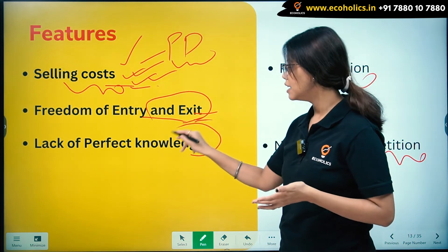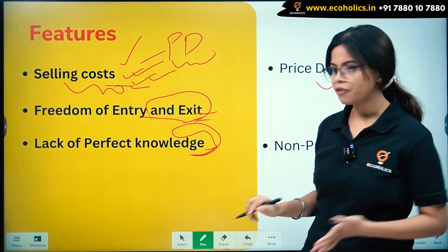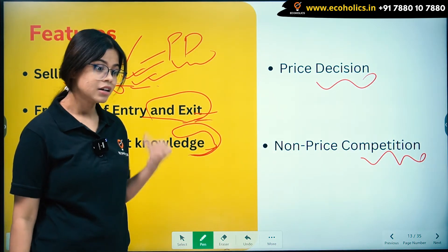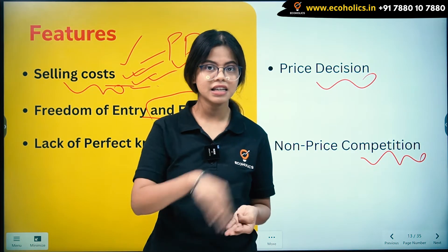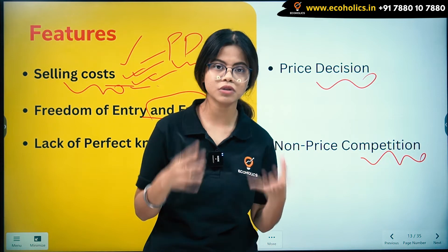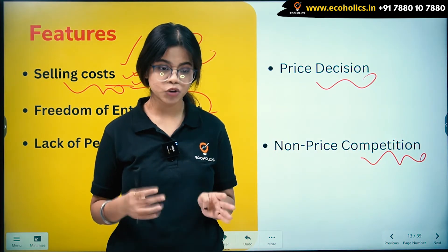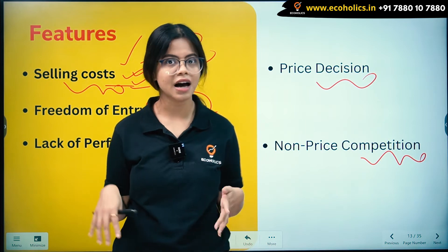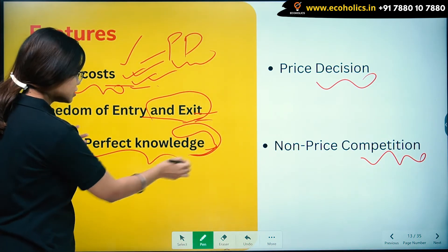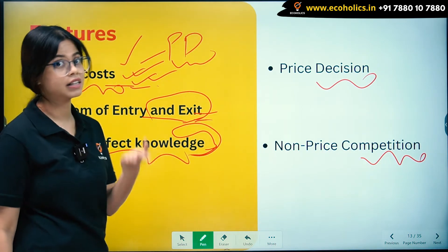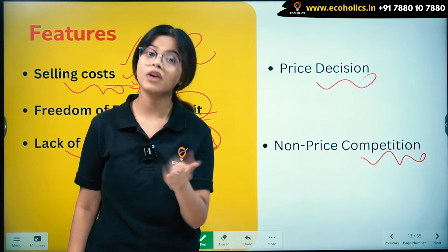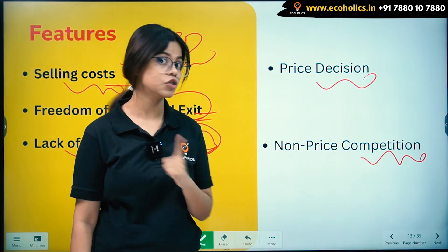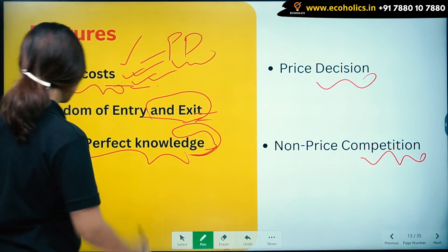Lack of perfect knowledge is another feature. In perfect competition, products are homogenous and everyone knows about them. But here, because of product differentiation, firms present their products in ways that may confuse buyers — consumers may believe features exist that do not. So there is not perfect knowledge among buyers and sellers, which is a distinguishing feature of monopolistic competition.